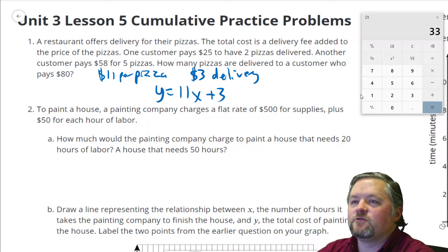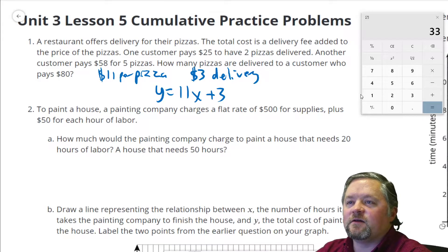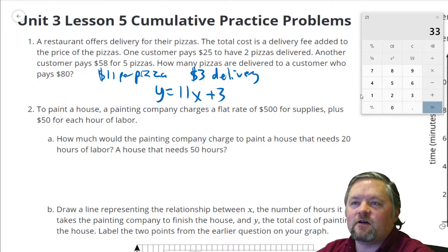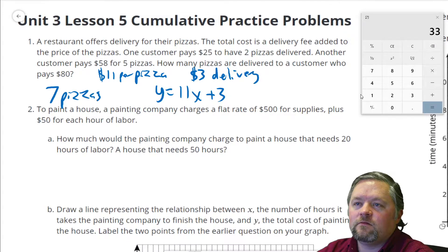How many pizzas are delivered to a customer who pays $80? Well, we could plug that in here, or we could think about it a little bit. If they pay $80, $3 of it's delivery, $80 minus $3 is $77. How many pizzas at $11 a piece are $77? That is seven pizzas.